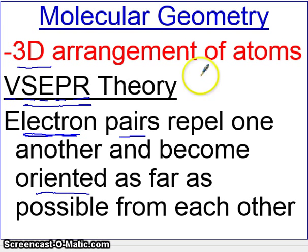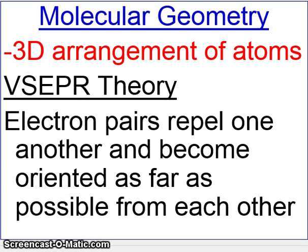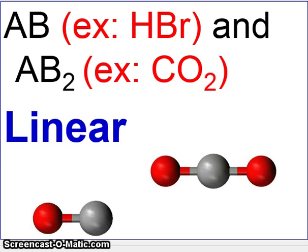There are about five shapes that we'll talk about, and you'll have to know these shapes. We'll show you how to predict these shapes from the Lewis structures of the molecules. The first shape is called Linear. With molecular models here, if you have two atoms, you get a linear arrangement. You can also have a linear arrangement if you have three atoms.